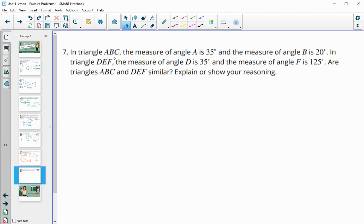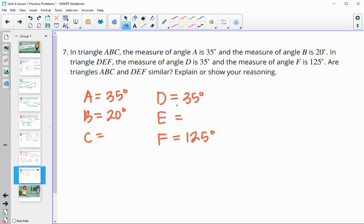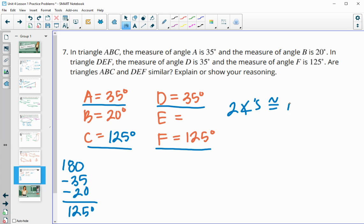And then finally, number 7 says, in triangle ABC, the measure of angle A is 35 degrees. The measure of angle B is 20 degrees. And then it says, in triangle DEF, the measure of angle D is 35 degrees, and the measure of angle F is 125 degrees. Are they similar, explain, or show your reasoning. So we just need to find one of these two missing measurements so that we can see if they have two angles in common. Because we already see that they have one angle in common. So we'll take the triangle sum, which is 180 for all three angles. We'll subtract 35 and 20 from 180 to get angle C, which we get as 125 degrees. And that matches angle F. So they have two angles congruent in each triangle. So they are similar by angle angle.